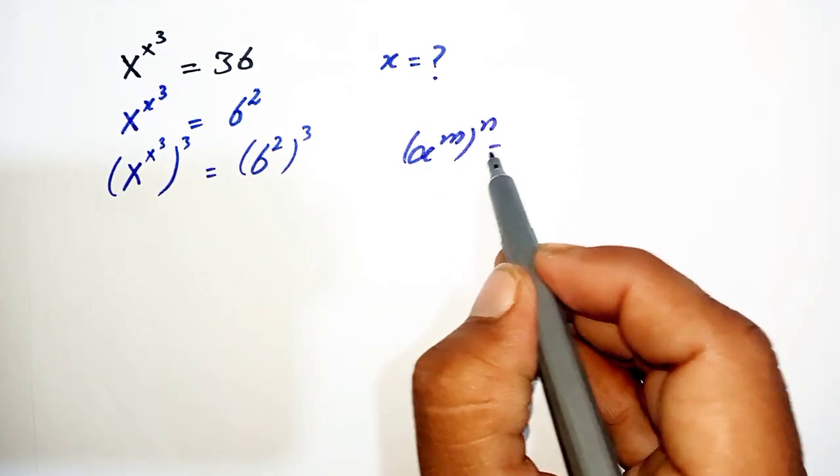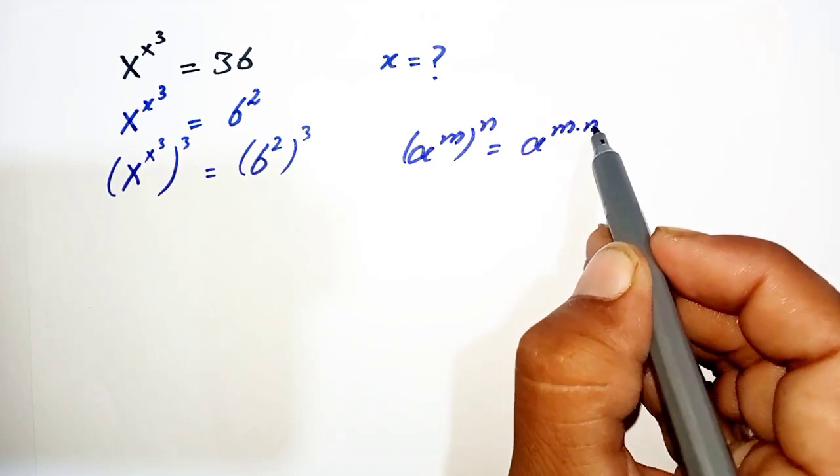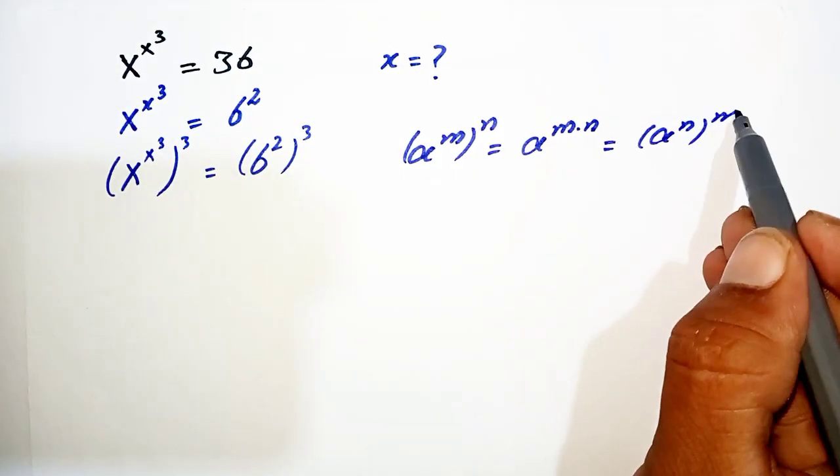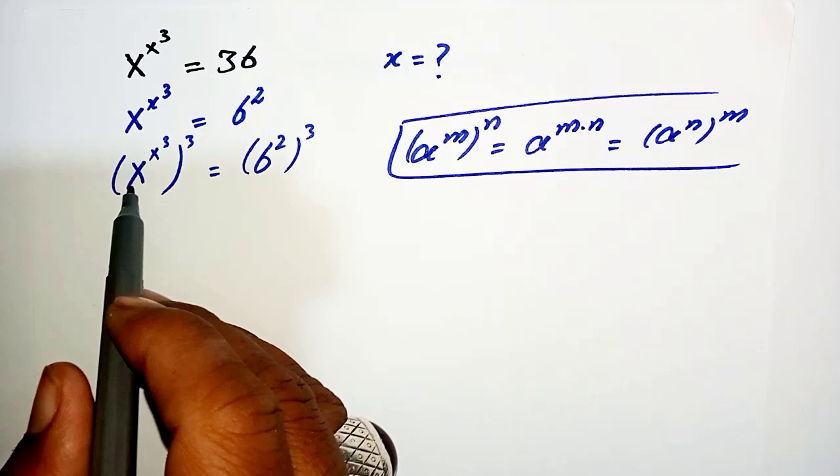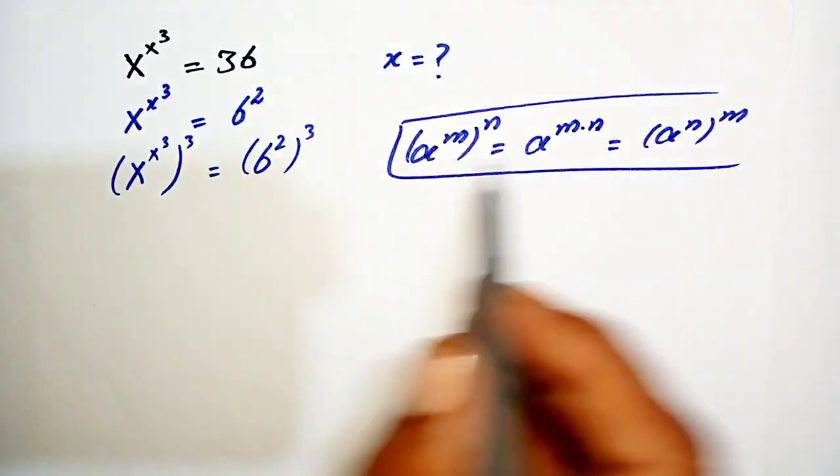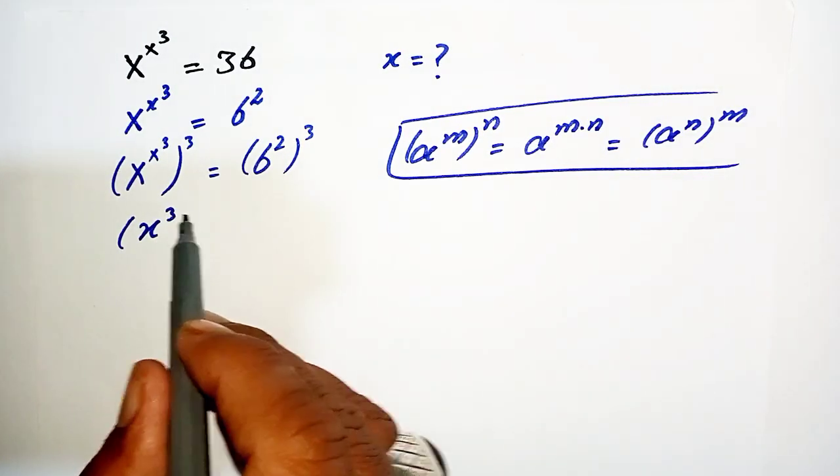Now we apply a power rule over this. The power rule is: (a^m)^n = a^(m·n), also written as (a^n)^m. This is a power rule. We apply this. First of all, we can change this power rule like this: (x^3)^(x^3) = 6^6.